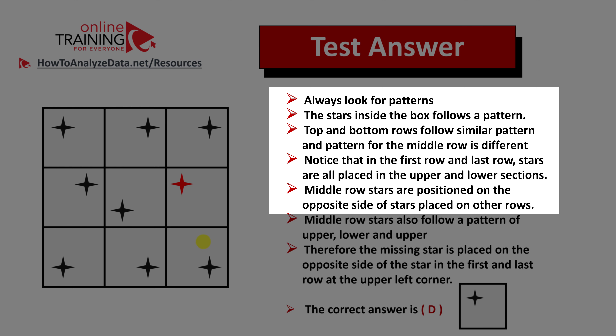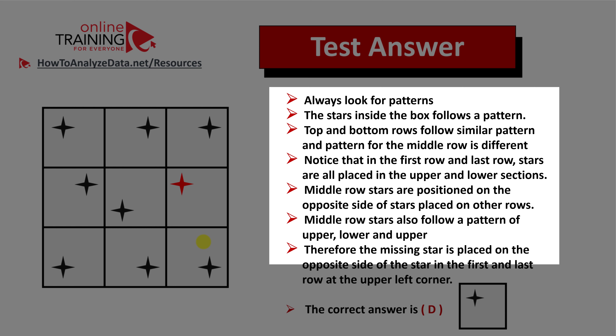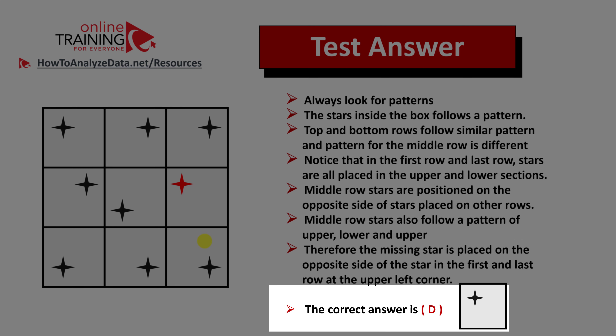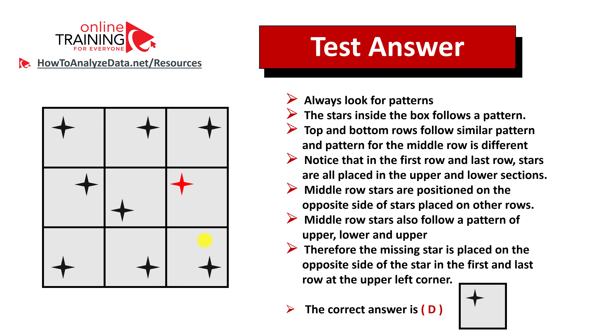Middle row stars, though, are positioned on the opposite side of the stars placed on other rows. Middle row stars also follow a pattern of upper, lower, and then upper. Therefore, the missing star is placed on the opposite side of the star in the first and last row at the upper left corner. So the correct choice here is choice D. Hopefully you've nailed this question, and in case you didn't, you now know how to answer similar problems on the test.